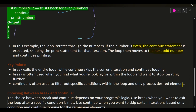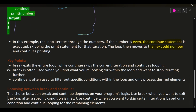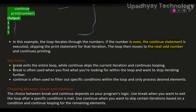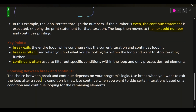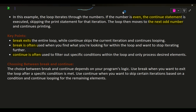Key points: break exits the entire loop while continue skips the current iteration and continues looping. Break is often used when you find what you're looking for within the loop and want to stop iterating further. Continue is often used to filter out specific conditions within the loop and only process desired elements.